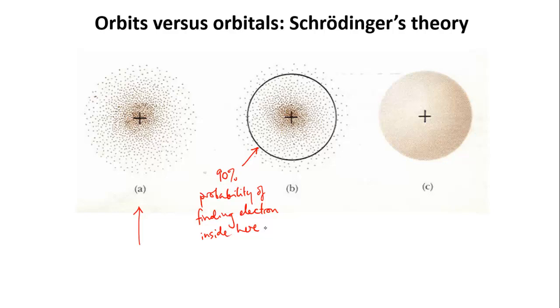You could think about it as the electron spending 90% of its time within the circle and 10% of its time outside it.